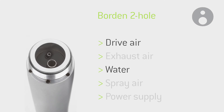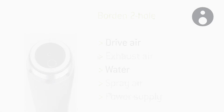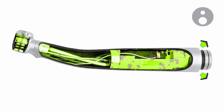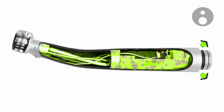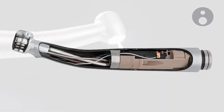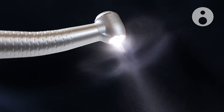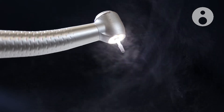The Borden two-hole connection has one connection each for the drive air and the coolant. The disadvantage is that the exhaust air from the rotor escapes on the connection side of the turbine or air motor and is not fed back into the dental unit via the supply line, meaning this air can be felt on the user's hand. The air required for cooling is diverted from the drive air within the instrument, which lowers the pressure and cannot be controlled separately.